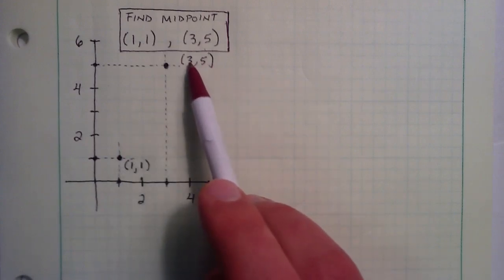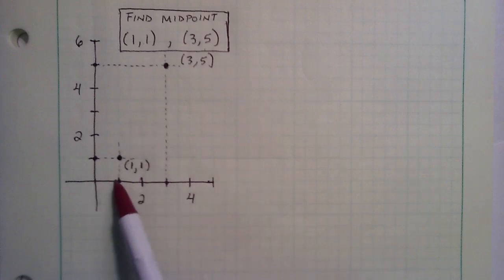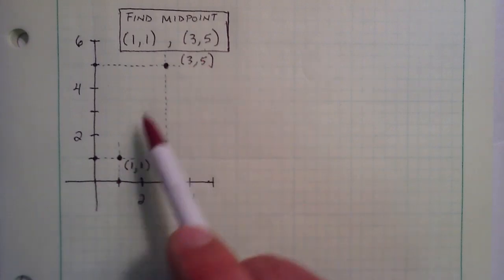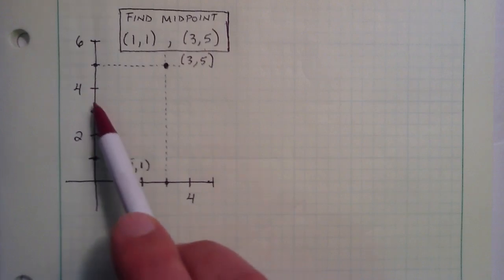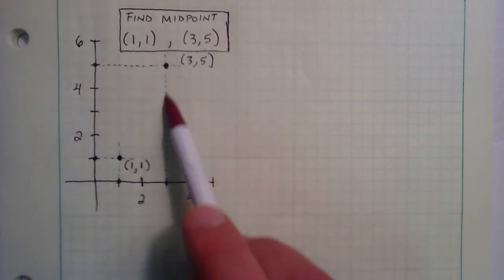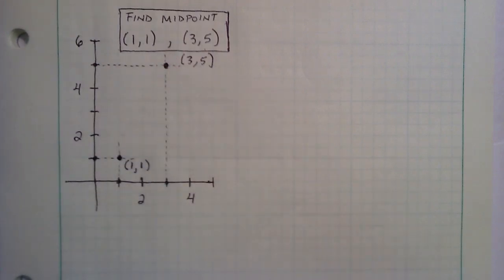This one has an x component of 3, so you go over 1, 2, 3 on the x axis, and you go up 5 on the y axis: 1, 2, 3, 4, 5, and where these two projections cross gives you the point (3,5).